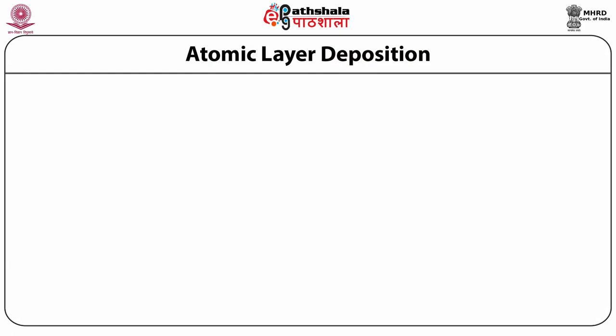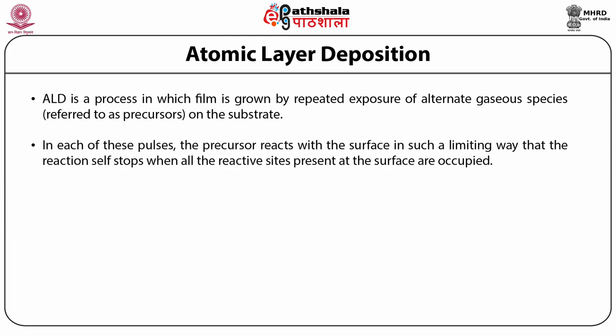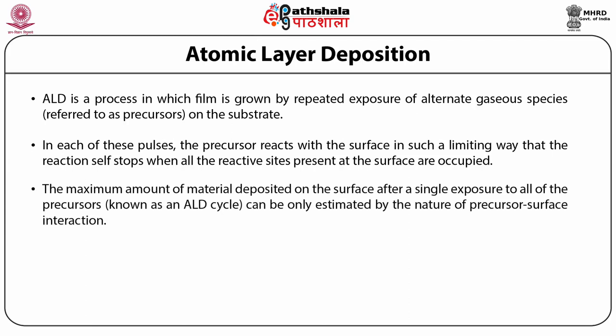Atomic layer deposition (ALD) is a process in which a film is grown by repeated exposure of alternate gaseous species on the substrate. Unlike CVD, all the precursors are not present in the chamber simultaneously, but are inserted in a series of sequential and non-overlapping pulses. In each of these pulses, the precursor reacts with the surface in a self-limiting way such that the reaction self-stops when all the reactive sites present at the surface are occupied.